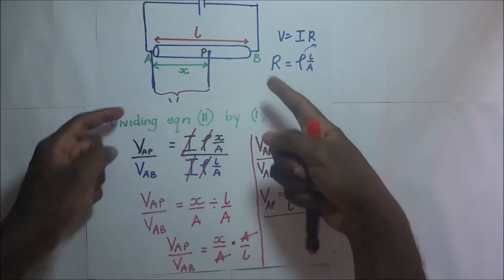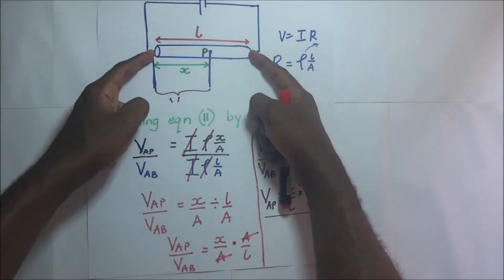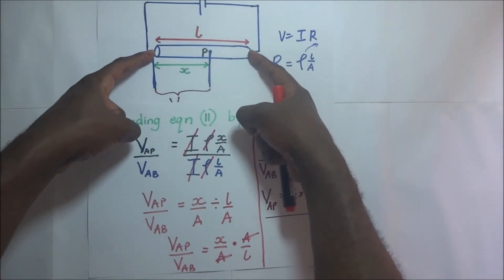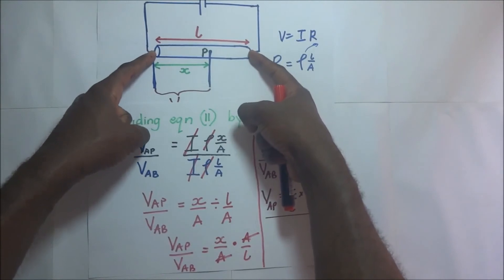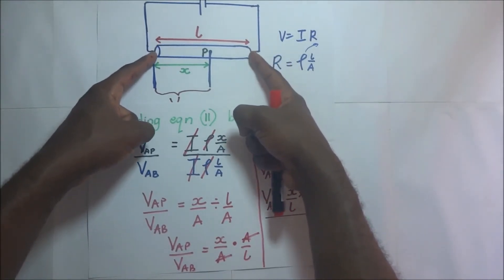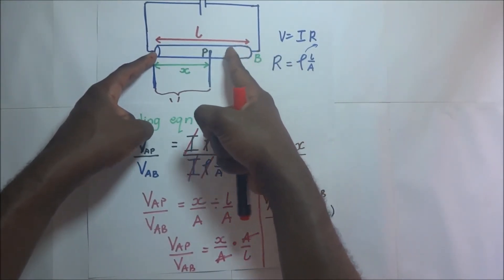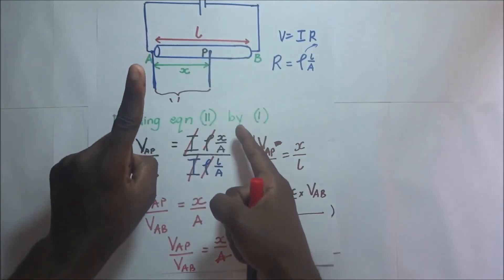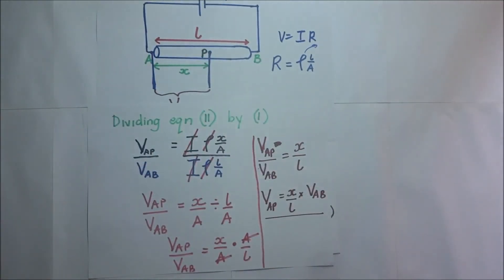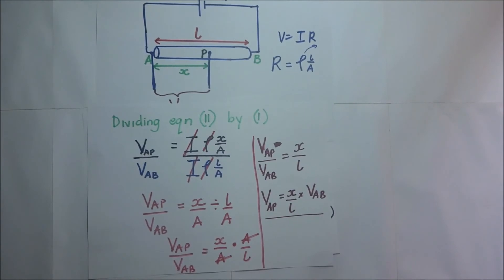In other words, if the potential difference across the whole wire is 10 volts and this wire is 10 centimeters, it would mean that each centimeter of that wire is 1 volt. That's what we mean by saying that the potential difference across the section of the wire is directly proportional to the length of the wire. This also simply means that the longer the portion of wire chosen, the higher the potential difference across it.